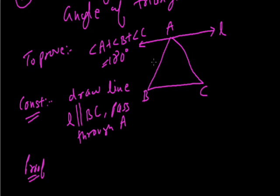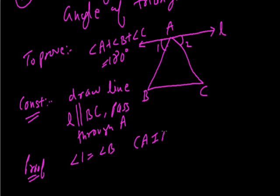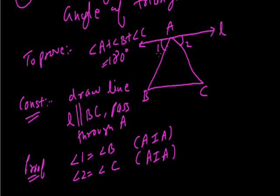Now let this angle be denoted by angle 1, and this is angle 2. Angle 1 is equal to angle B because alternate interior angles are equal. Same way, angle 2 is equal to angle C — again alternate interior angles are equal. Because angle 1 and angle B form the shape of Z, so they are alternate interior angles, and as the lines are parallel, angle 1 equals angle B and angle 2 equals angle C.